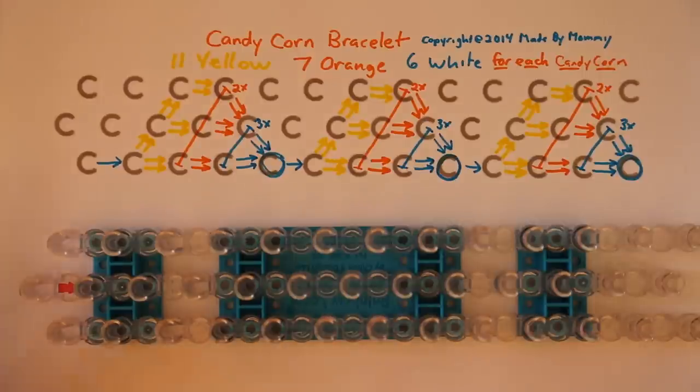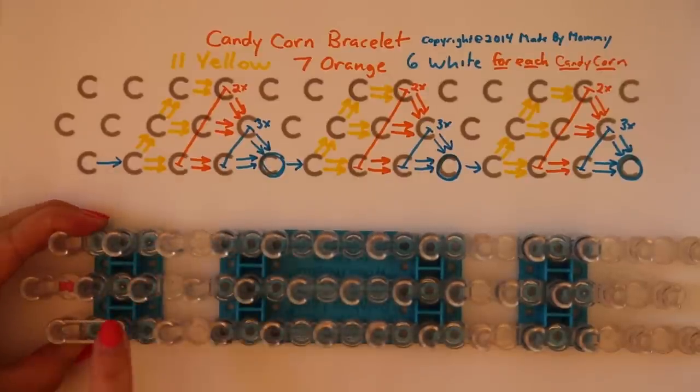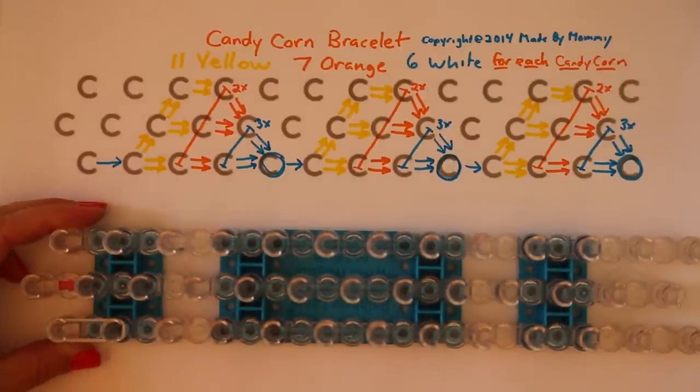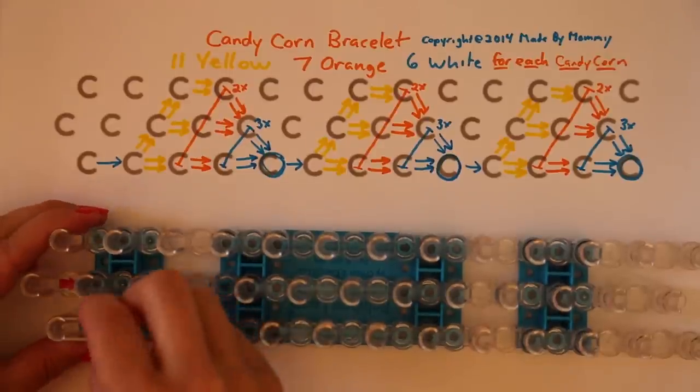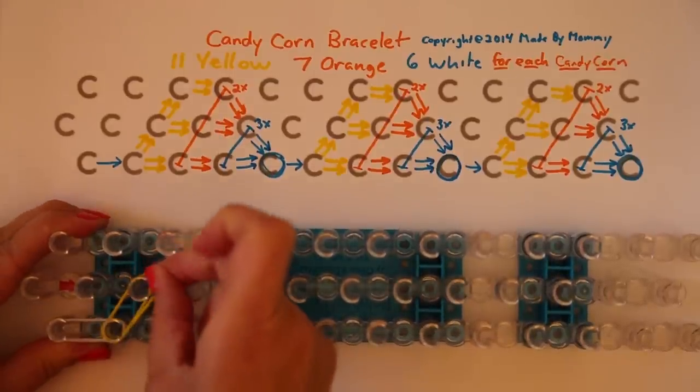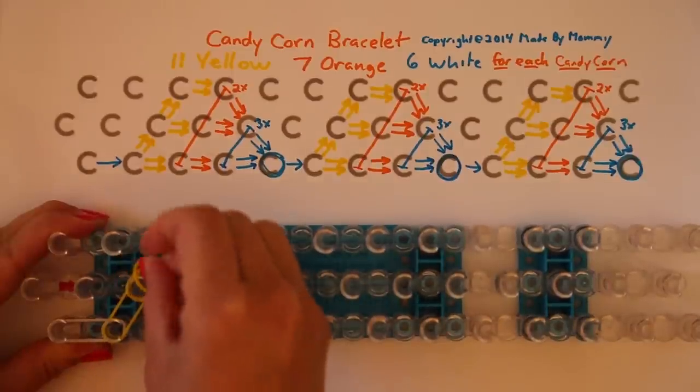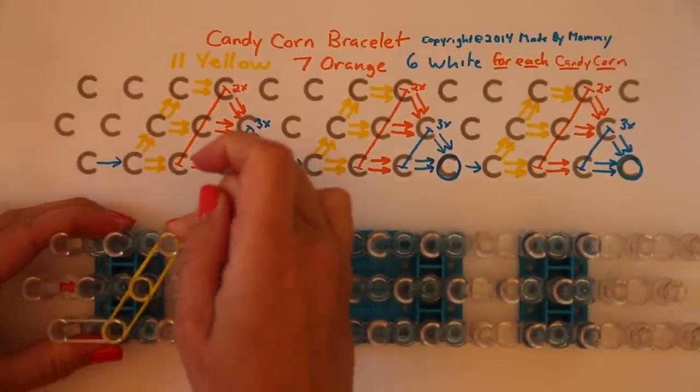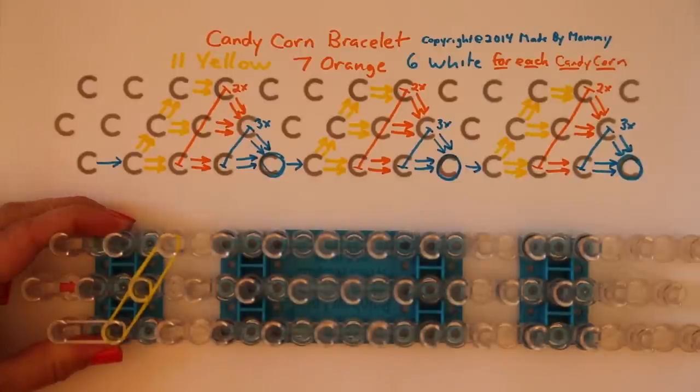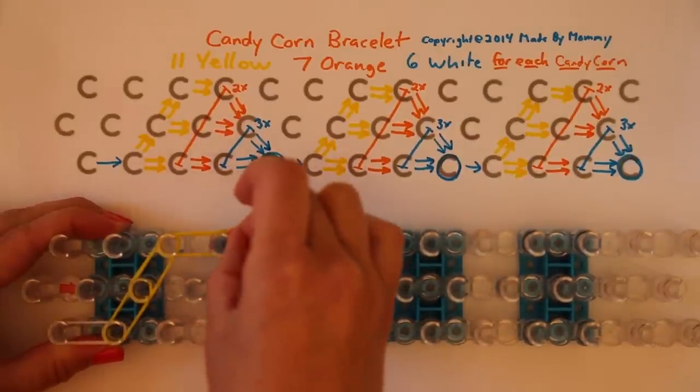To begin, take a single white rubber band and place it going forward. Then take two yellow at a time from the side to the center, and the center again to the opposite side. Then, two yellow at a time going straight forward on each of the three rows.